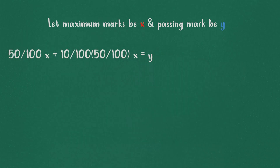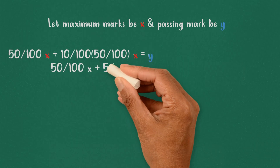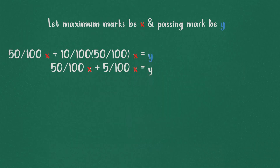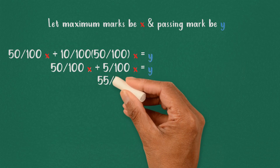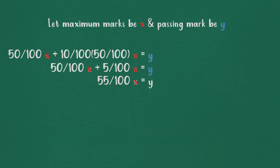50% of x plus 10% of 50% of x gives the passing mark, that is y. This adds up to 55% of x equals y.